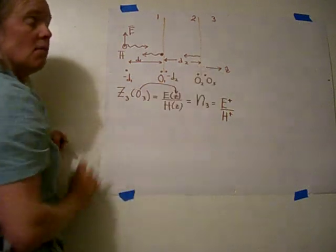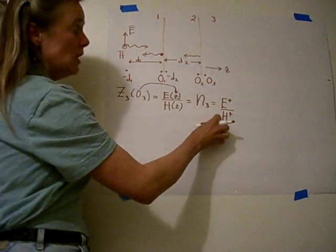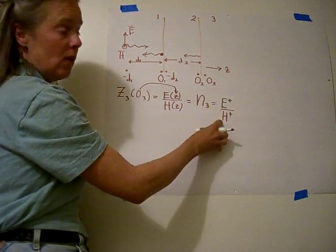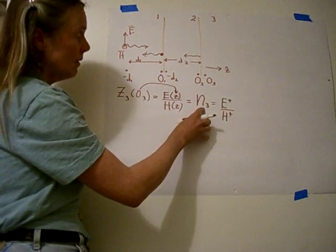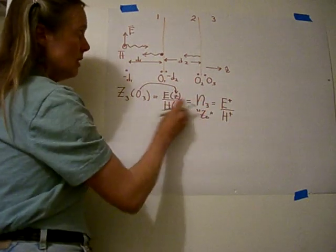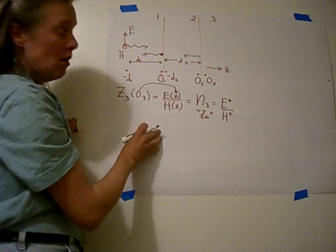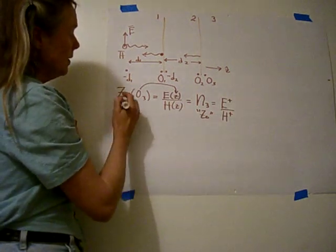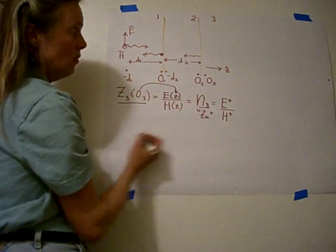But look at region number three — there's no reflection here at all. So in region number three, the ratio of the positive-going electric and magnetic fields, which is eta3, is like z0. It is equal to the ratio of the total fields because there are no reflected fields. So the first thing we do is set z3 at O3 equal to eta3. Remember, this is in ohms.